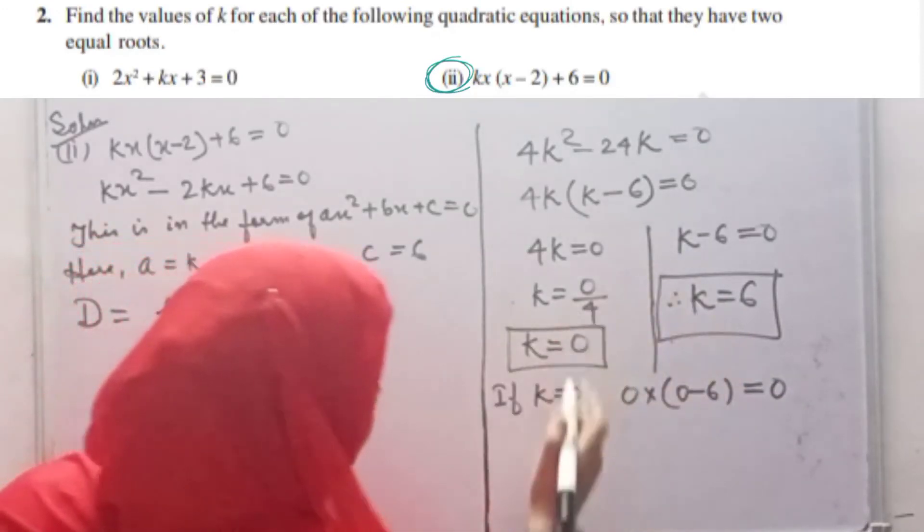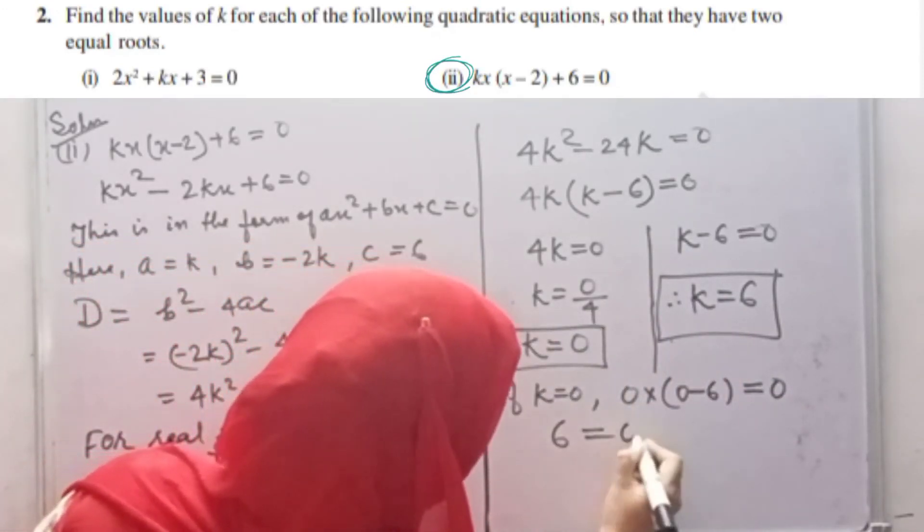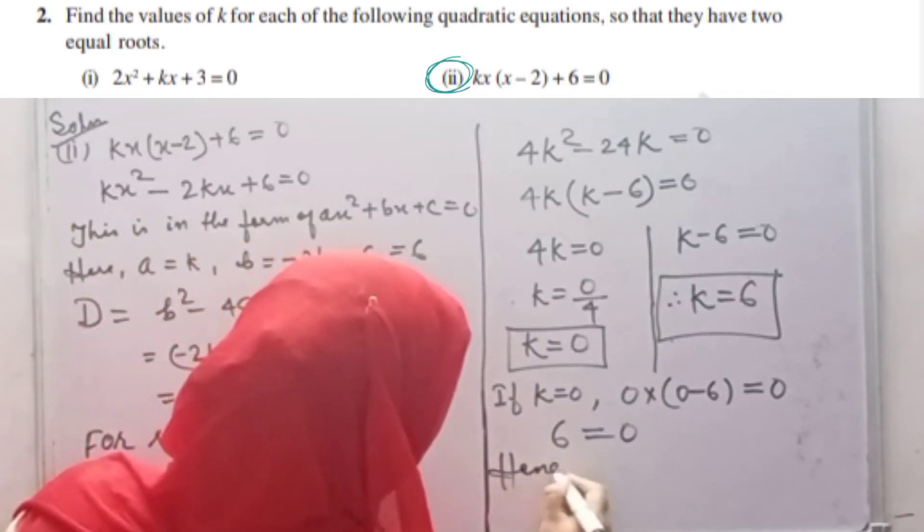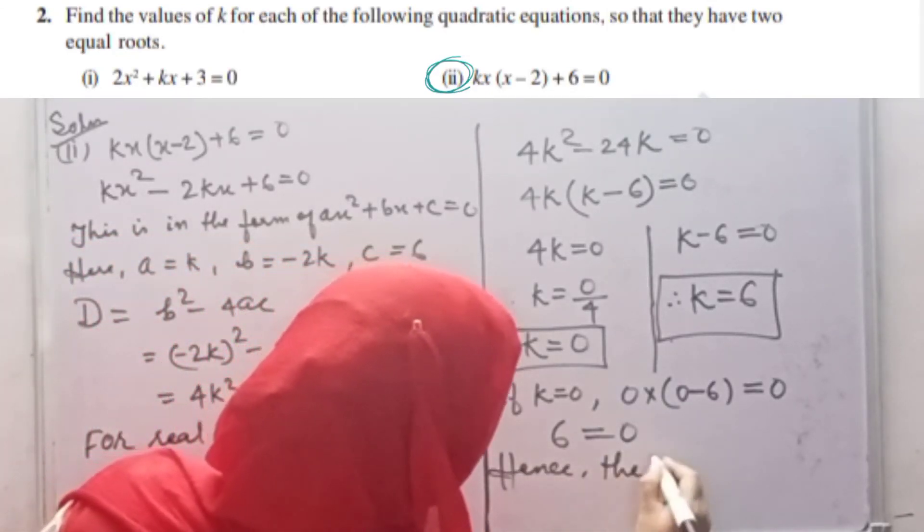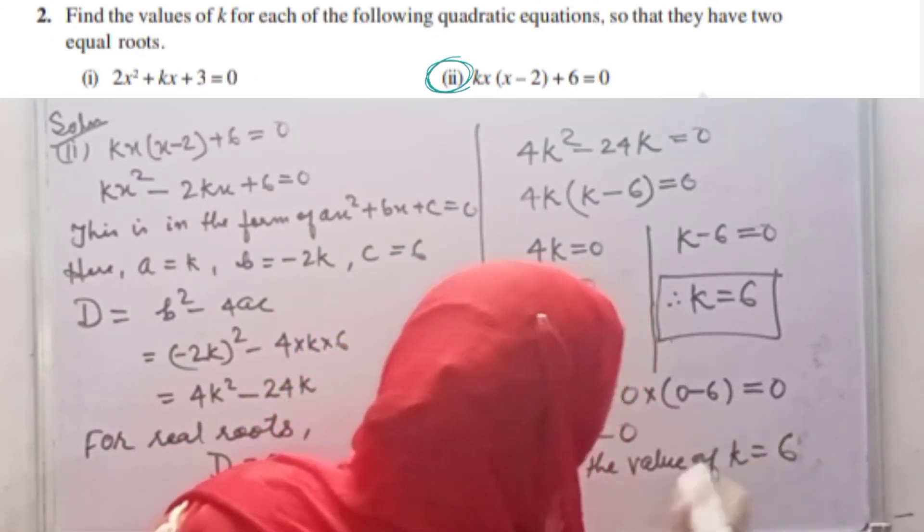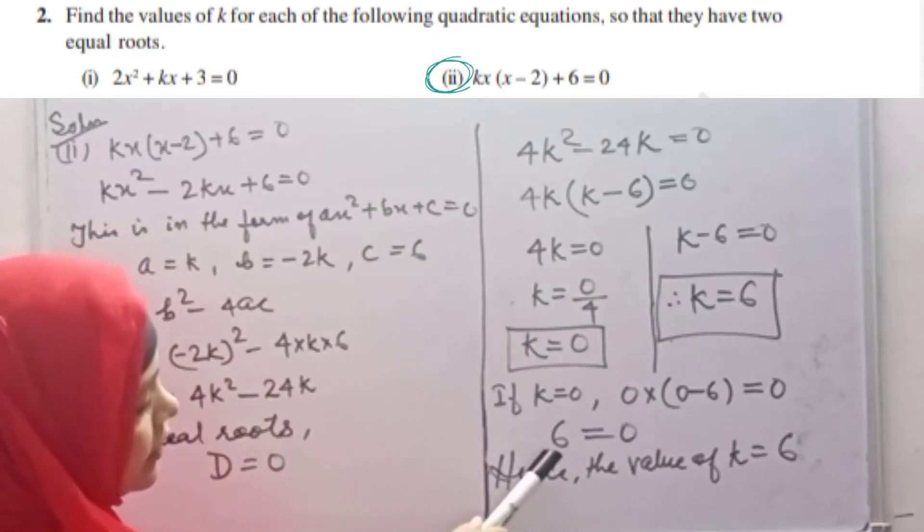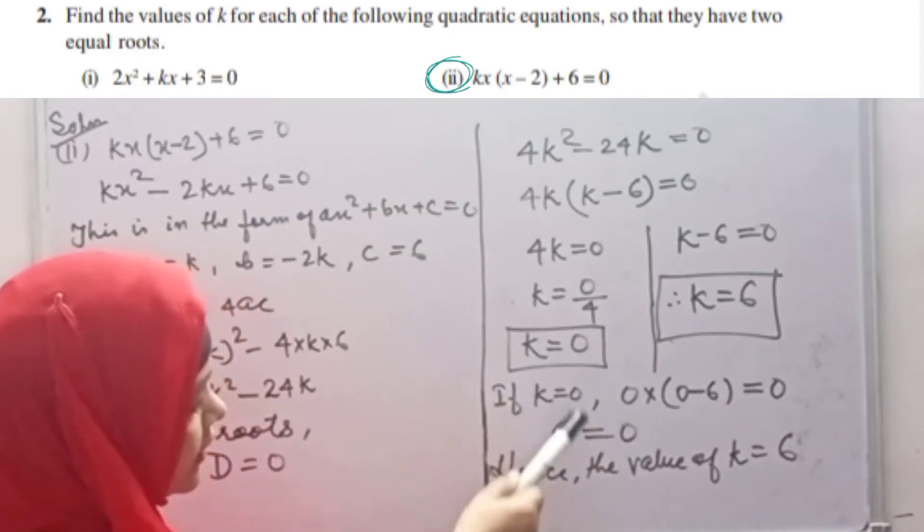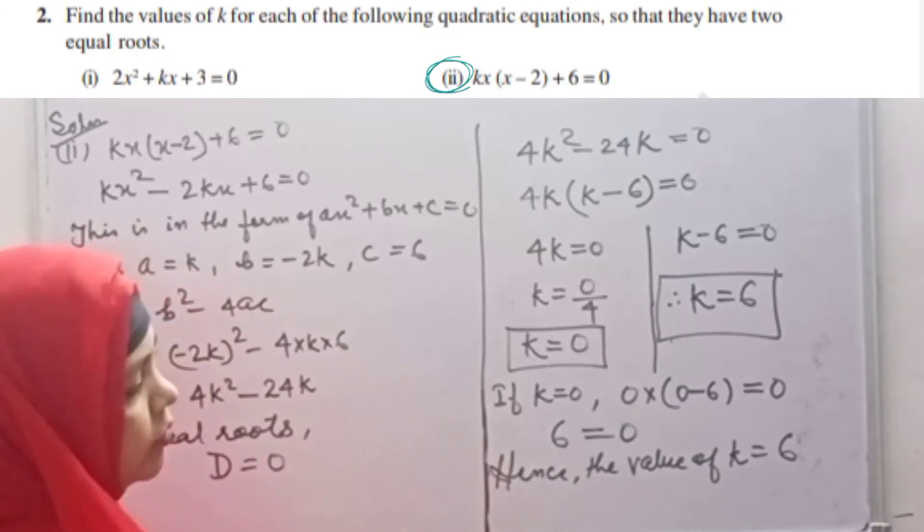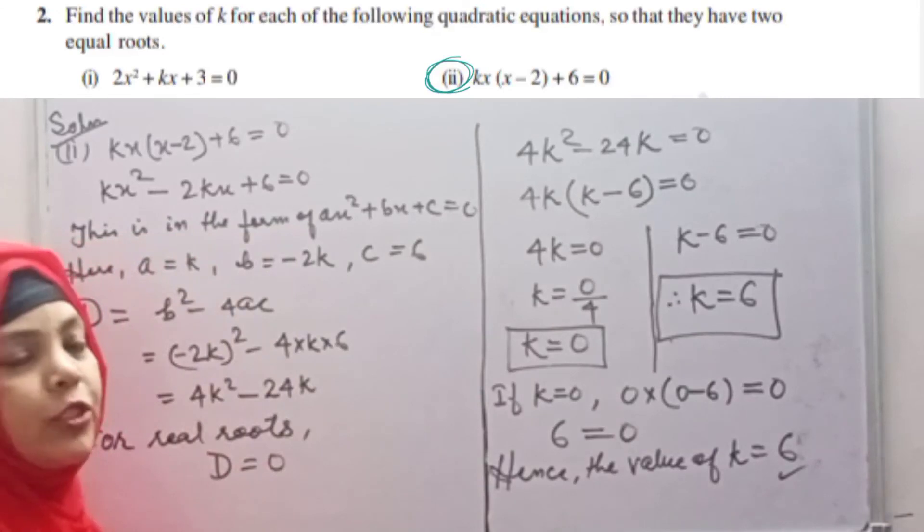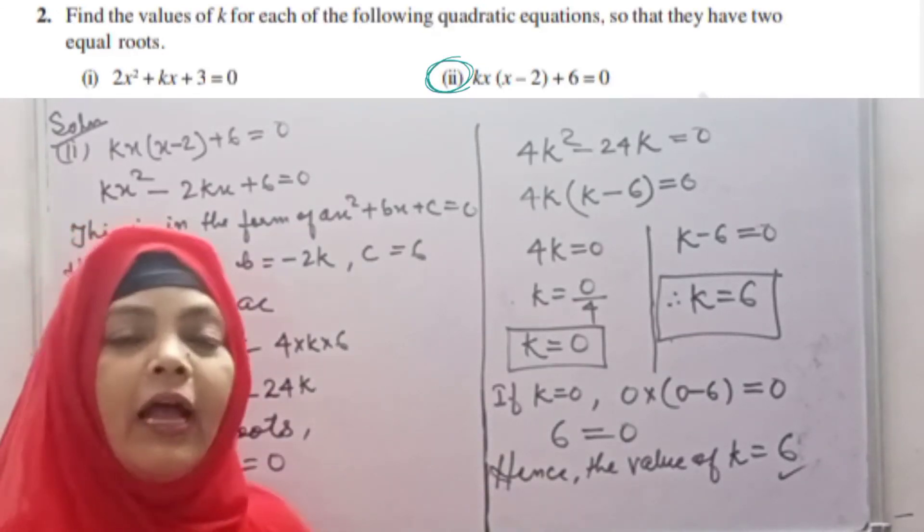6 is not equal to 0. So we can simply say the value of k is 6. Because if we take the value 0, then that is not valid. So the value of k is 6. 0 is not possible. Understood?